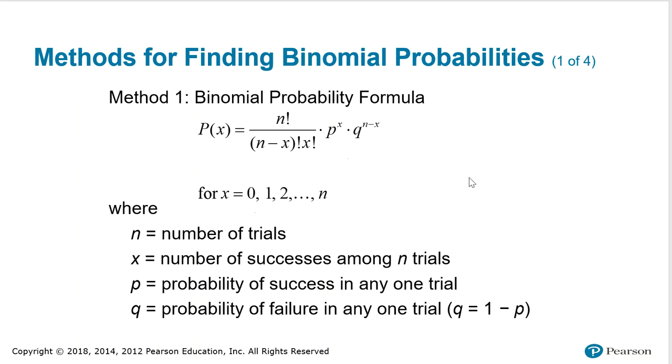It's also included in your formulas and charts packet. The formula is read P of x equals n factorial over n minus x, that quantity factorial, and then x factorial,